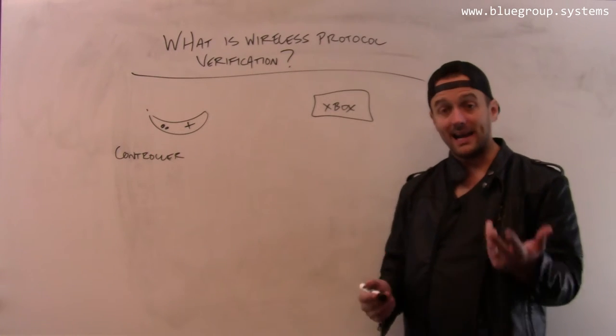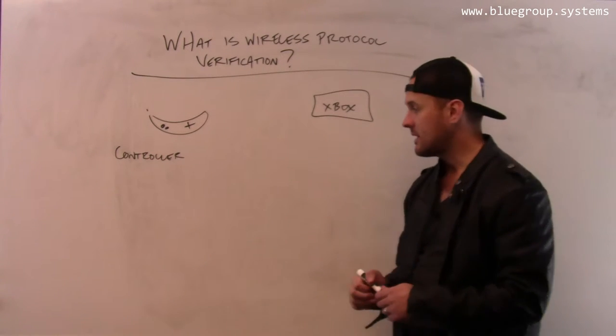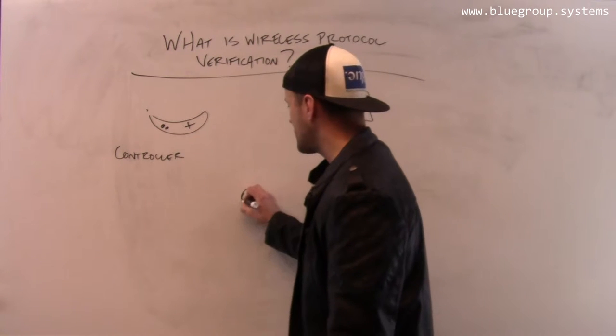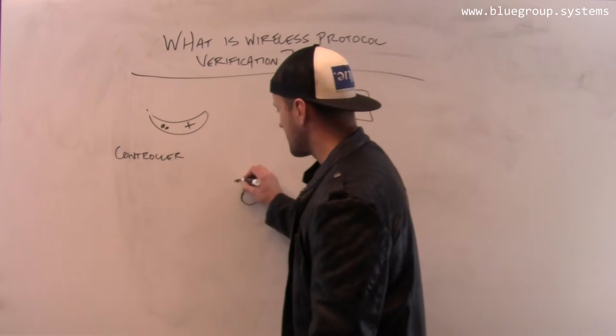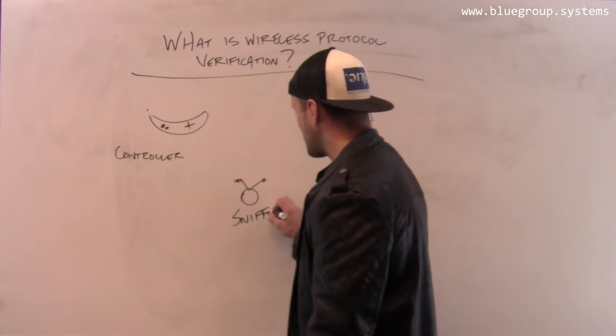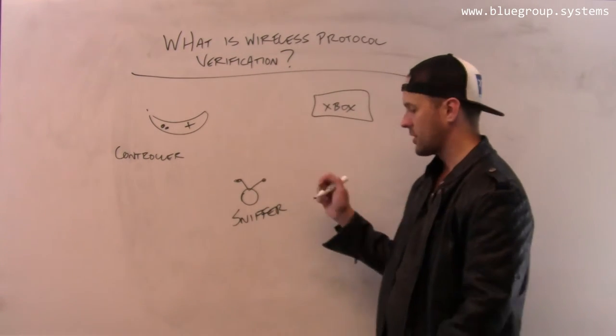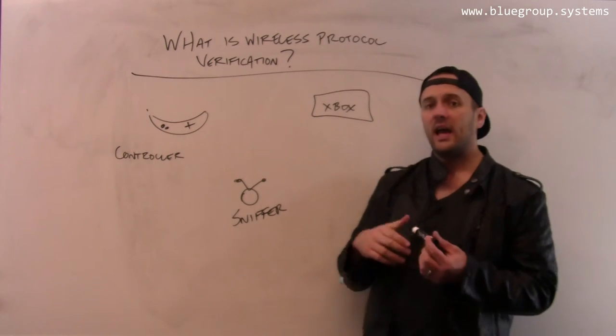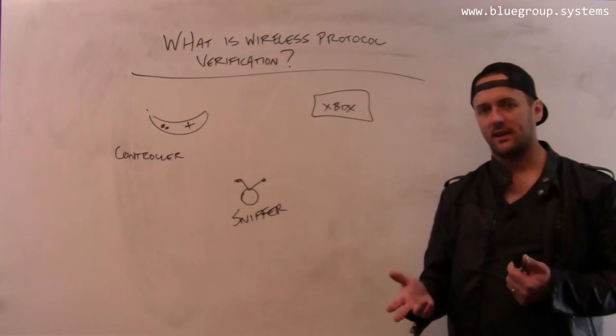So the idea that Jinghao has been pursuing is using a third device called a wireless sniffer. A sniffer is going to sit there passively in co-location with these other two devices and try to record all the traffic that they exchange.